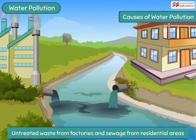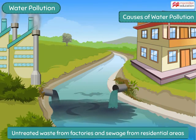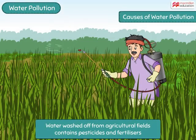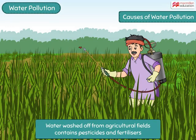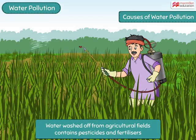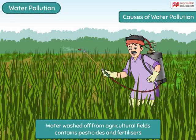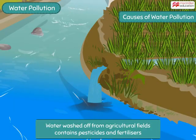from residential areas adds toxic chemicals and waste into the water bodies. Water that is washed off from agricultural fields contains large amounts of pesticides and fertilizers that pollute the water of the nearby water bodies.